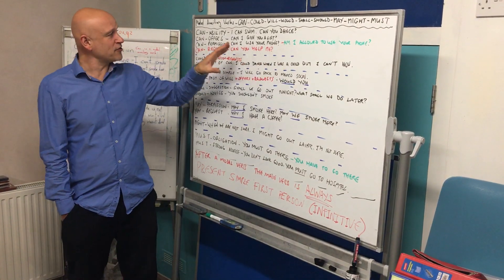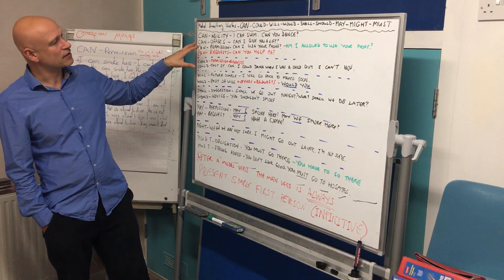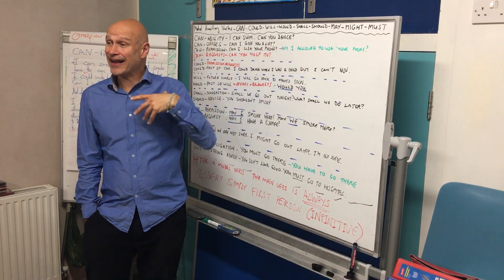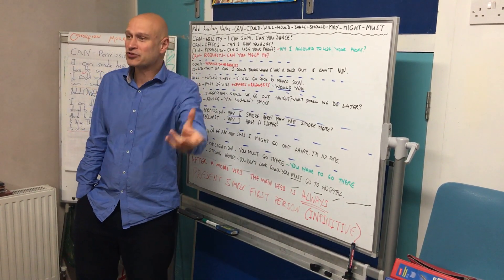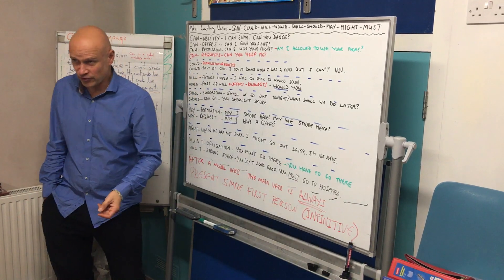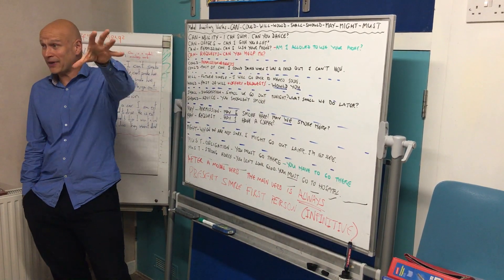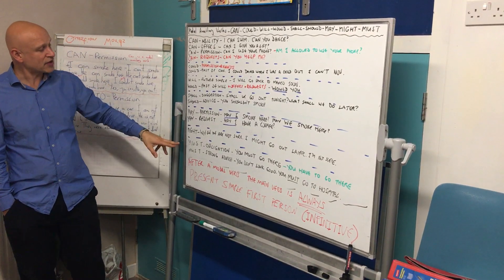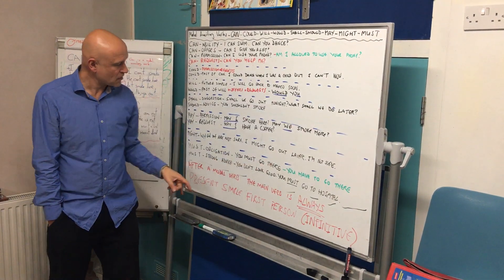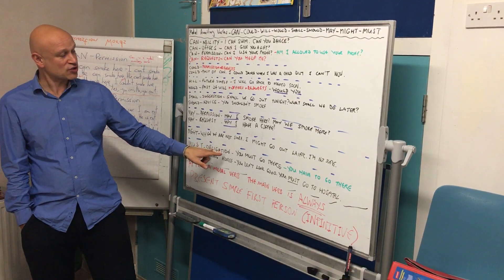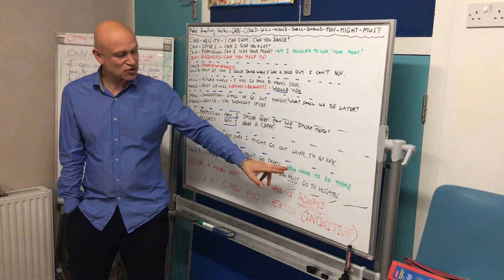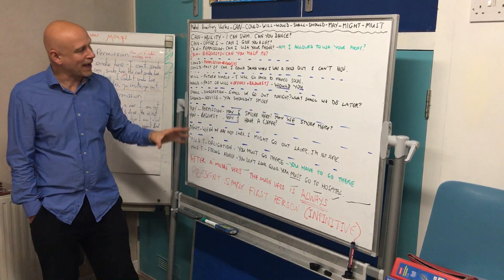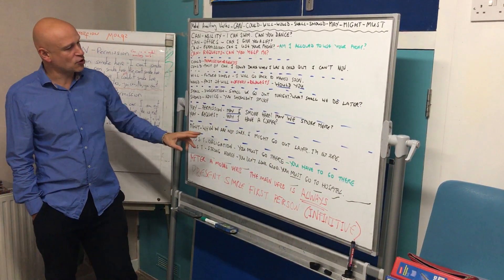Another way of expressing permission — which we learned last term, written in green — is 'allowed to': am I allowed to smoke here? Am I allowed to use your phone? I'm allowed to make video recordings. For obligation, instead of 'must' we can also use 'have to'.